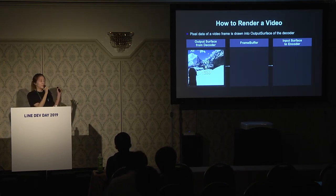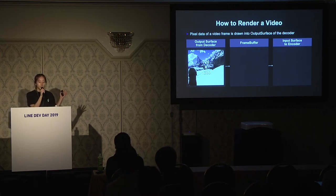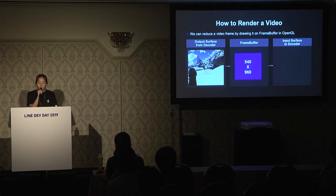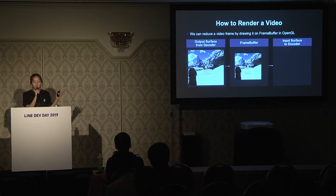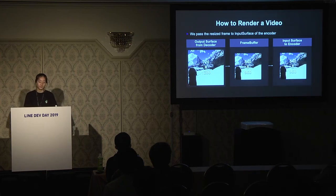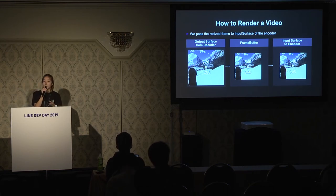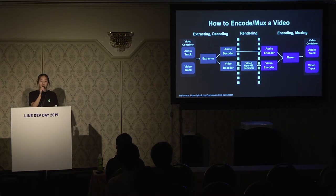This is a video frame of my snowboarding video with its resolution. The output surface of the decoder holds the pixel data of the video frame. We prepare a frame buffer with a size of 540 wide by 960 high, then draw the video frame from the output surface into the smaller frame buffer — this resizes it. Then we draw it again into the input surface of the encoder, which compresses the video frame with the encoding algorithm.